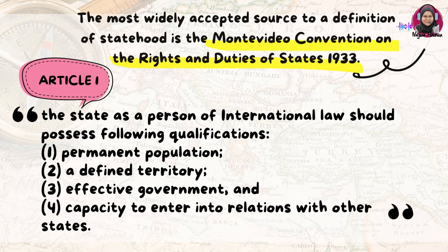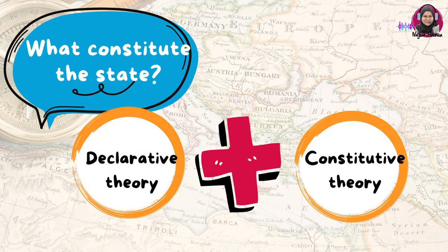The most widely accepted source on the definition of statehood is the Montevideo Convention on the Rights and Duties of States 1933, which we will discuss shortly. To constitute a state, we can look into two theories: number one, declarative theory, and number two, constitutive theory.